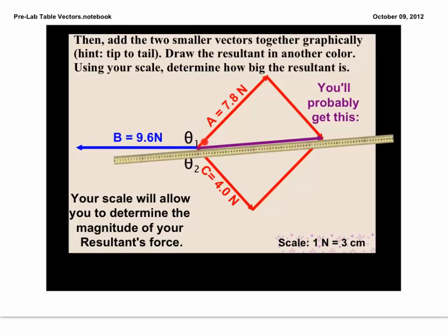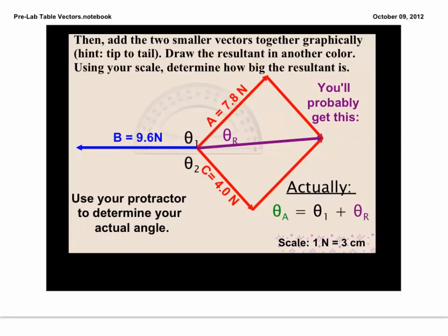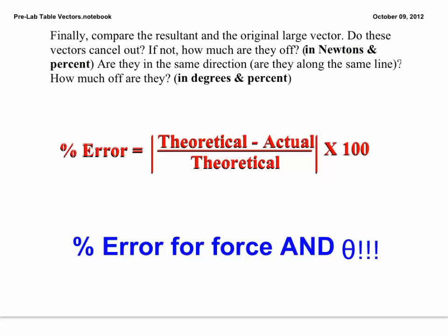Once you actually measure your resultant in centimeters, you'll need to convert it back into newtons. That will give us the magnitude of that vector. You'll also need to measure the angle of the resultant and compare it to what you think you were supposed to get. Once you've done that, you're going to perform an error analysis for each value of the theta of the resultant and for the magnitude of the resultant.